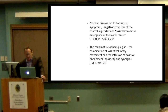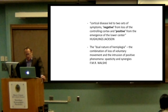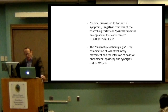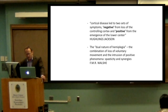This has been appreciated for over a century, with the negative and positive symptoms coined by Hughlings Jackson at the end of the 19th century. A Queen Square neurologist, F.M.R. Walsh, writing in the early 20th century, also spoke about this dual nature of hemiplegia — the combination of loss of voluntary movement and the intrusion of positive phenomena: spasticity and synergies. We have a very hard problem to crack because we need separate treatments for the negative and the positive symptoms, somewhat reminiscent of the difference between negative and positive symptoms in schizophrenia.